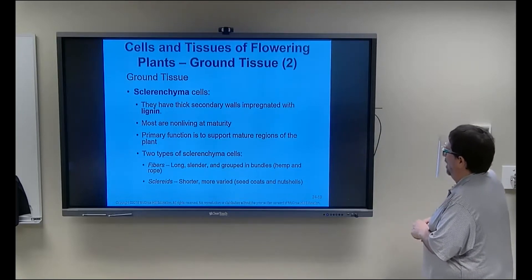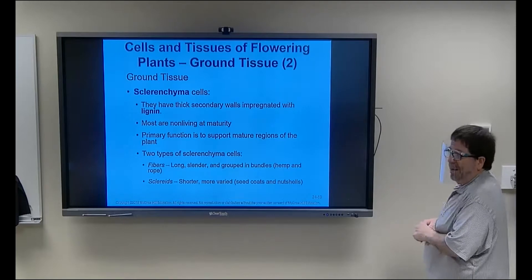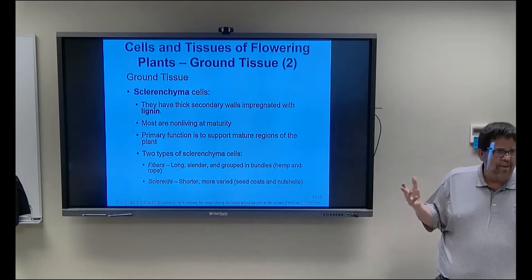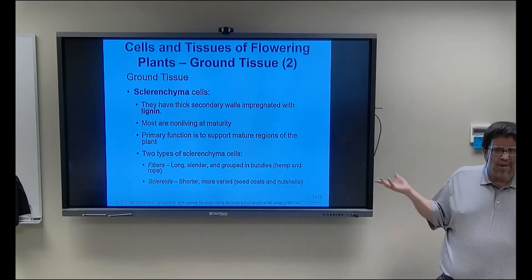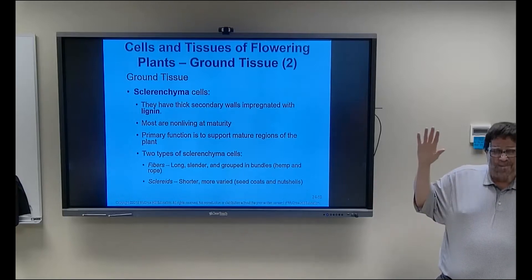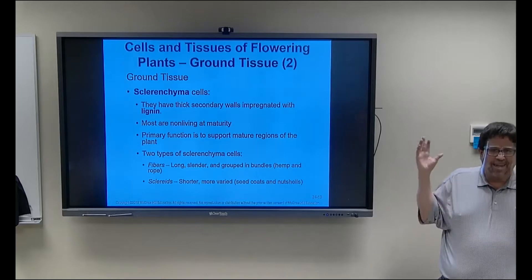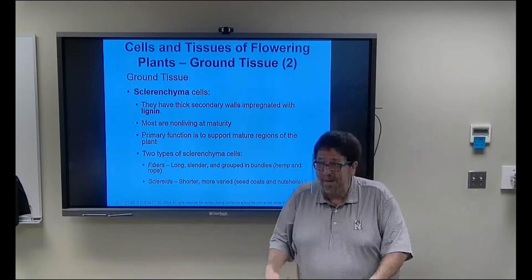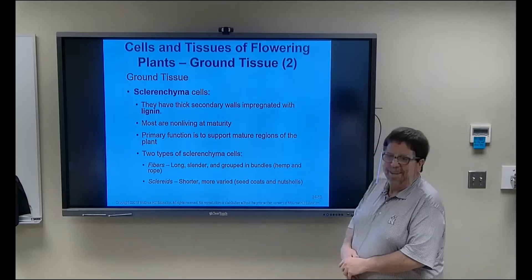Sclerenchyma has a super thick secondary wall of lignin, very tough and non-living at maturity. Its primary function is support in mature regions of the plant. Examples of sclerenchyma are fibers — long slender cells found in bundles. The twine used in old square hay bales was made out of hemp fibers, and that brings us to marijuana — which was brought to America for fiber production, not to smoke.